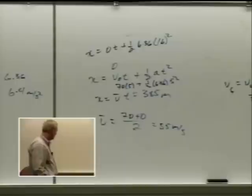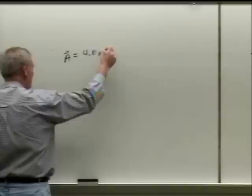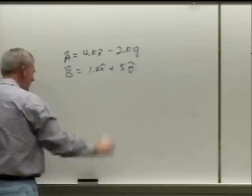Page two caused people all kinds of heartache — something I probably didn't go over well enough. So if I've got two vectors: A is 4.0 x-hat minus 2.0 y-hat, and B equals 1 x-hat plus 5 y-hat.